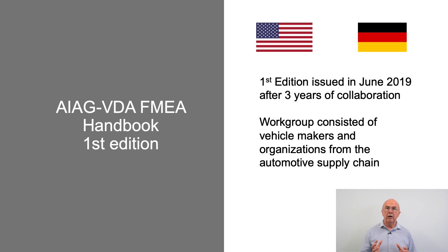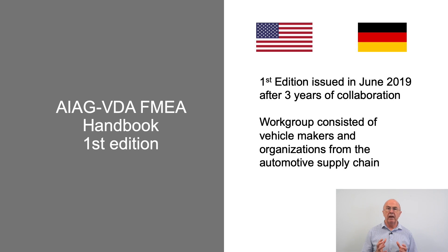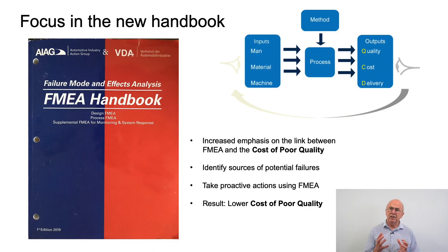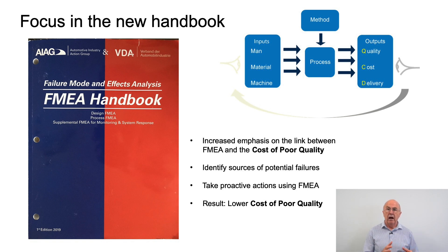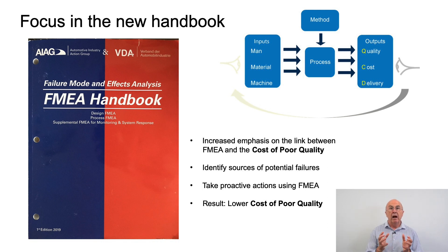Let's take a look at one significant change in the field of FMEA, which is the issue of the new AIAG VDA FMEA handbook, first edition. To produce this handbook took three years of collaboration, made up of a working group of vehicle manufacturers and organisations at different levels in the automotive supply chain. There is increased emphasis on making sure that FMEA is implemented effectively, and that's the link between FMEA and the costs of poor quality. We should be identifying sources of potential failures and then taking proactive action using FMEA to reduce the risk.